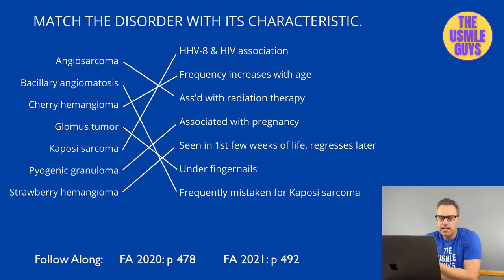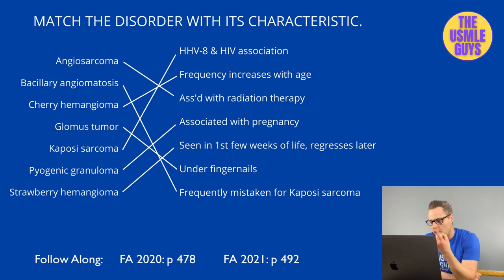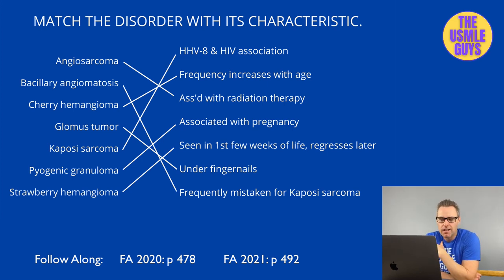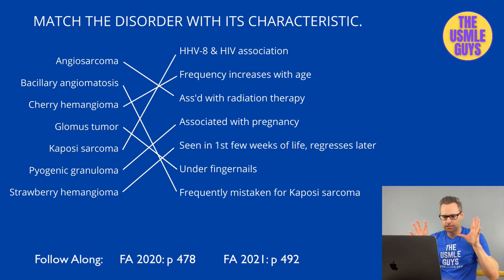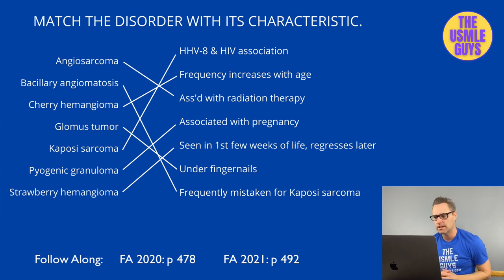Pyogenic granuloma is a capillary hemangioma known to ulcerate and bleed, associated with both trauma and pregnancy. Finally, the strawberry hemangioma is a benign capillary hemangioma seen in infancy. It typically appears within the first few weeks of life, grows rapidly, then spontaneously regresses — usually between five and eight years of age.